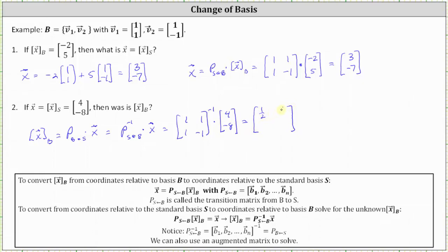The inverse matrix has first row (one half, one half) and second row (one half, negative one half). Multiplying, we have one half times 4 plus one half times negative 8, which is 2 plus negative 4, equaling negative 2. For the second entry, we have one half times 4 plus negative one half times negative 8, which is 2 plus 4, equaling 6. So the coordinates of vector x relative to base B are (negative 2, 6). I hope you found this helpful.